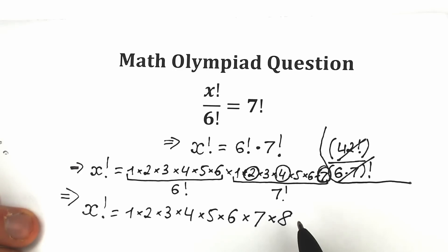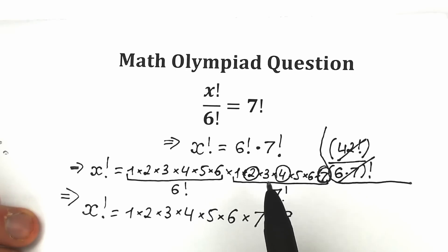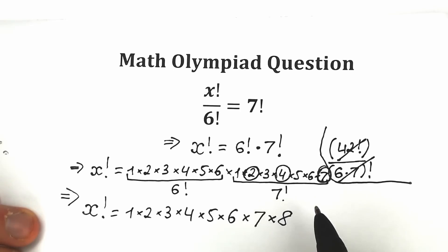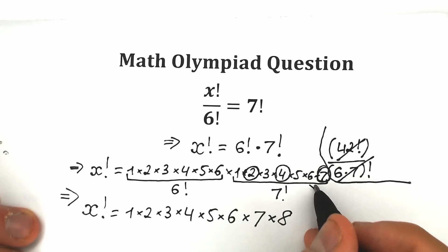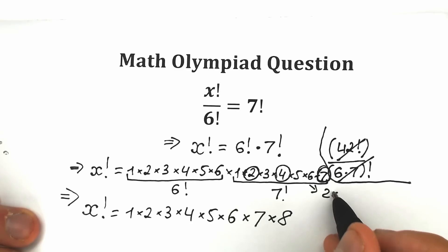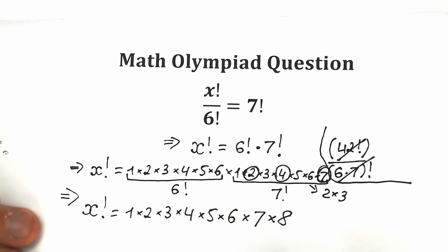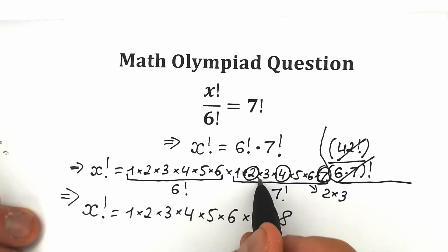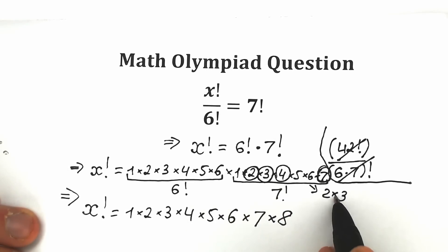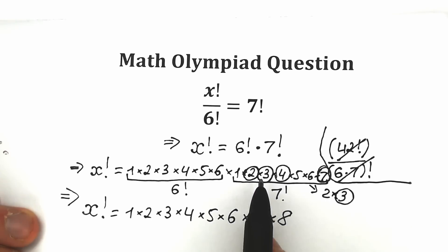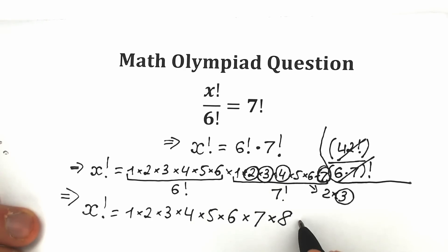Next, we need to find 9. From the remaining factors we have 1, 3, 5, and 6. If we rewrite 6 as 2 times 3, we can take one 3 from this 6 and another 3 already present. As a result, 3 times 3 equals 9, so times 9.